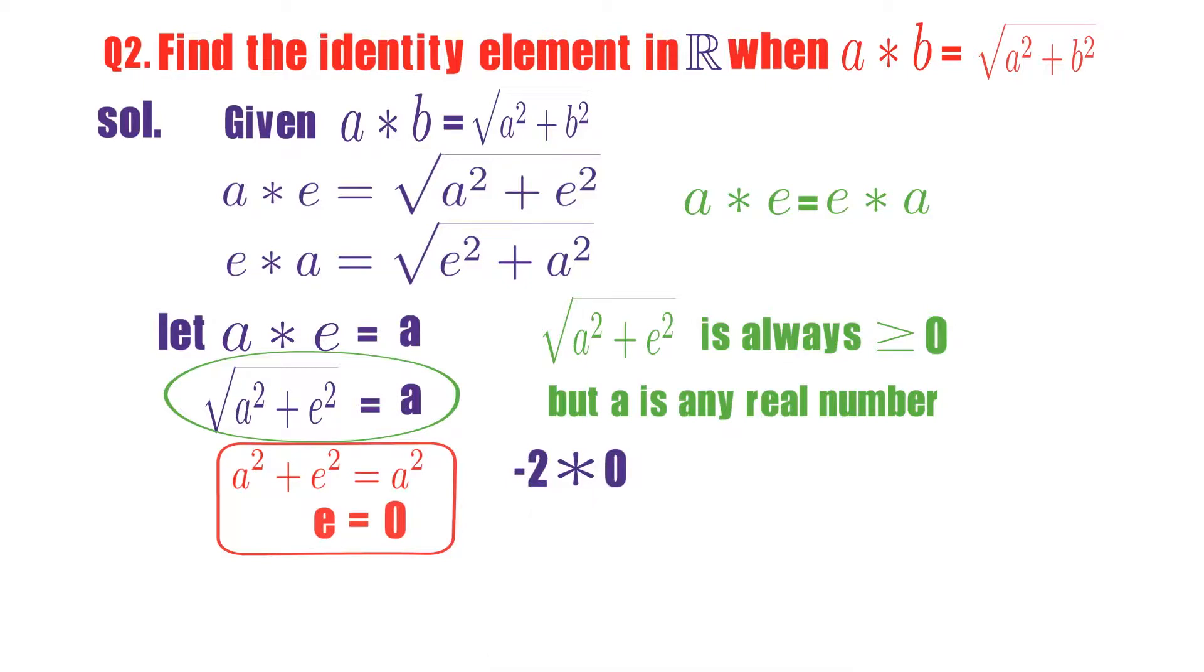Minus 2 star 0. As per the definition, how it is defined? Root over minus 2 whole square plus 0 square. What is its value? Its value is root 4. Root 4 is equal to 2.